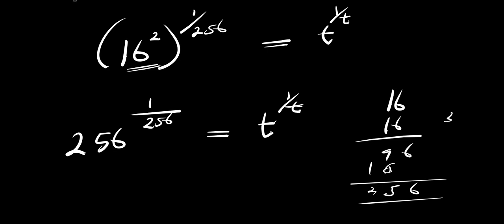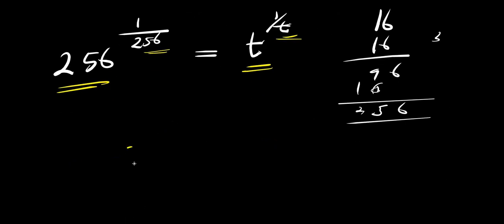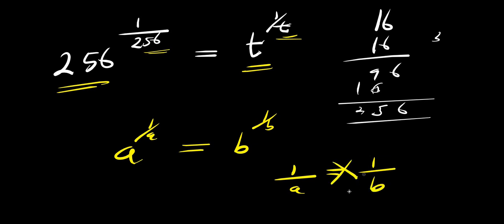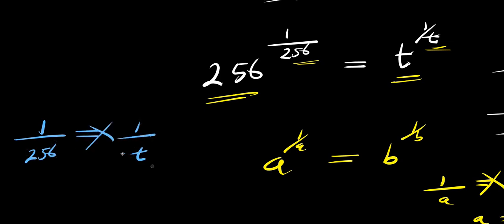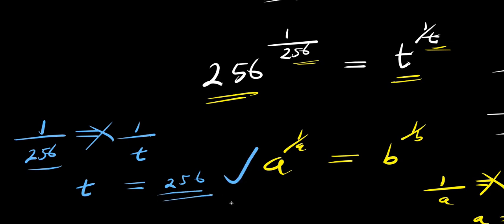So right now what I'm going to do is equate, because this and this are the same, and t and t are the same. So if you have a to the power of 1 over a, and this equals b to the power of 1 over b, that means 1 over a equals 1 over b, and cross multiplying gives a equals b. So I can do the same thing here. I can have 1 over 256 equals 1 over t. Cross multiplying: t times 1 is t, and this equals 256 times 1, that is 256. That is our answer.